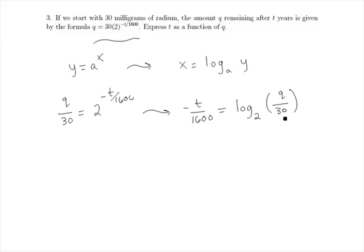Now that the t is outside of the power, we can solve for it directly using algebra. Multiplying both sides by negative 1600 gives us t equals negative 1600 log base 2 of q over 30. So this is t expressed as a function of q.